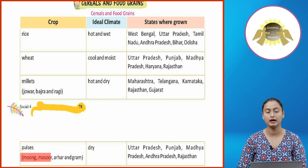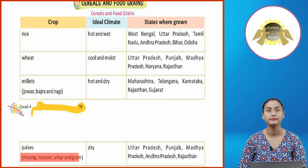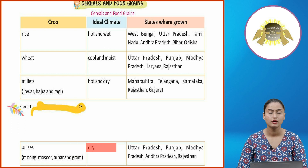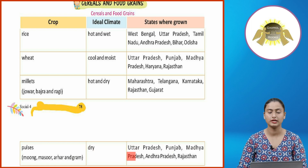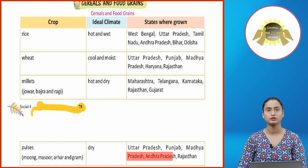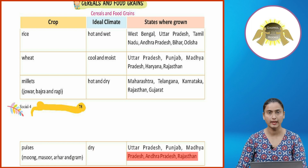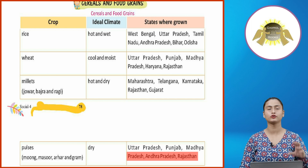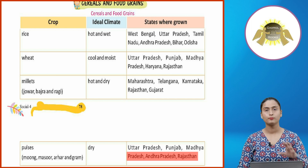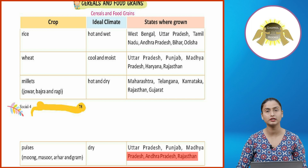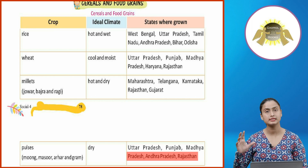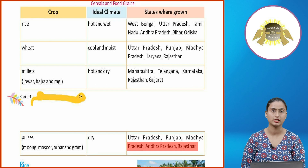Pulses such as Moong, Masoor, Arhar, and Gram are grown in dry conditions in Uttar Pradesh, Punjab, Madhya Pradesh, Andhra Pradesh, and Rajasthan. The table shows the crop type, the climate in which they grow, and the states where they are grown.